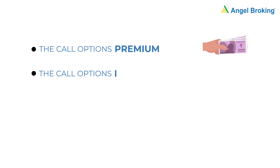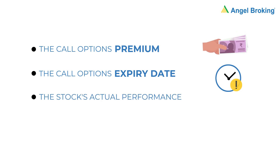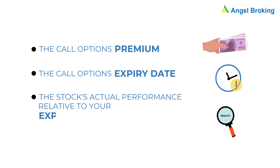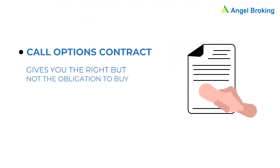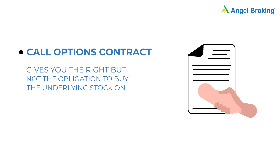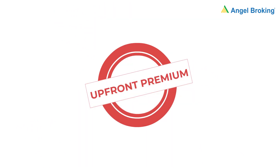There are three moving parts here: the call option's premium, the call option's expiry date, and the stock's actual performance relative to your expectation. A call options contract gives you the right but not the obligation to buy the underlying stocks on or before the expiry date at the strike price. For this right, you must pay an upfront premium.